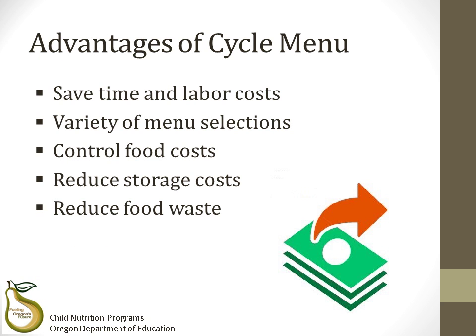Using cycle menus in child nutrition programs has many advantages. They save time and labor costs by eliminating continuous planning of menus. Gathering information for crediting food items is more efficient, purchasing procedures can be standardized and take less time, menu costs are calculated once per cycle, and standardized grocery lists can be developed. They provide for more efficient production as staff become more familiar with recipes. Cycle menus allow menu planners to offer a variety of menu selections and help to keep you out of a menu rut, since you can see what items are being over-served or what could be added for greater variety. Planners can also take advantage of seasonal ingredients and celebration days. Having menu items set several weeks in advance helps when items aren't available and substitutions need to be made.